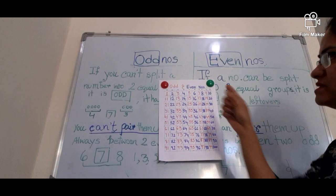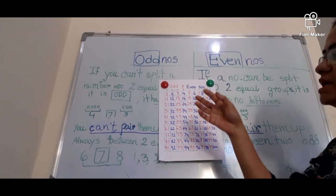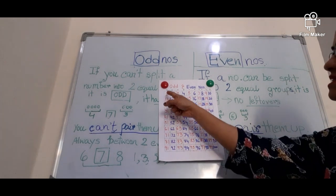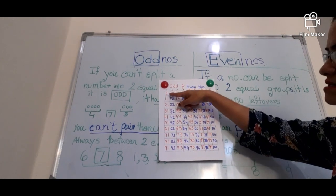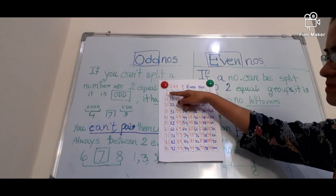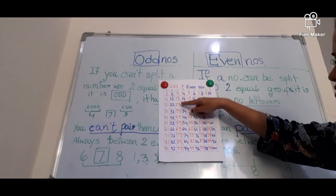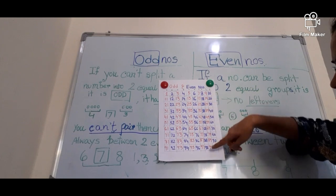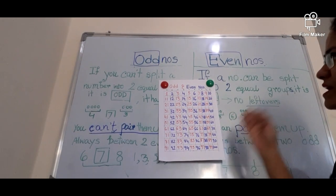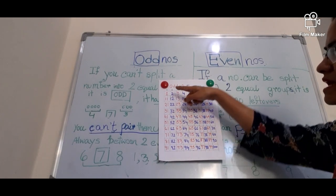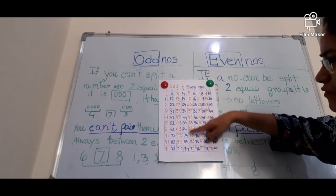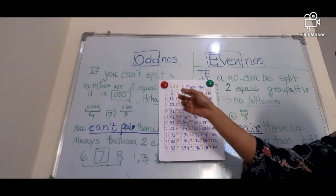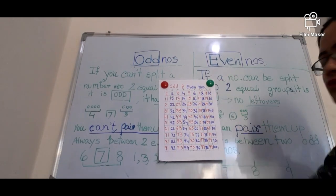And in the case of even numbers, the last digit of the number should be two, four, six, eight, or zero. If you memorize this trick, you can easily find out which one is odd and which one is even. For odd numbers the last digit is one, three, five, seven, or nine. For even numbers the last digit is two, four, six, eight, or zero. Whenever the last digit is two, four, six, eight, or zero, it is an even number.